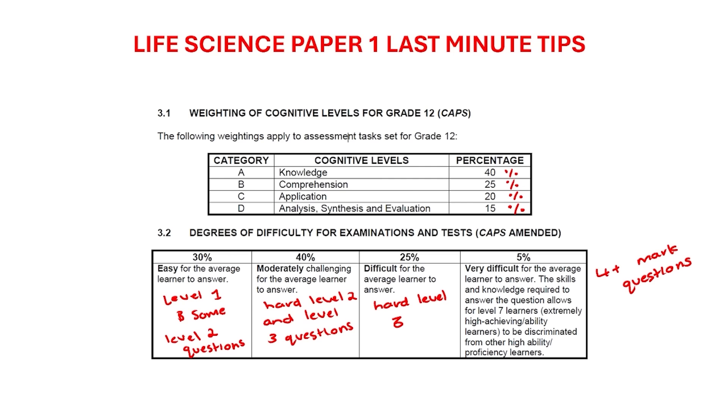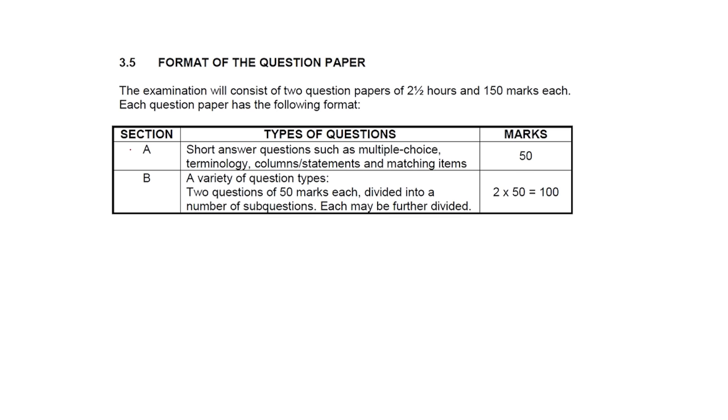Now let's look at the sections in Life Science Paper 1. It consists of two sections: Section A, which would be short answer questions, your multiple choice, terminology questions which give the term and then the column which are statements and matching the terms. You would have true or false, or A, B, or both A and B, or none. That would consist of 50 marks of the paper.